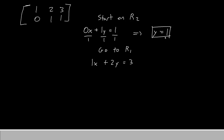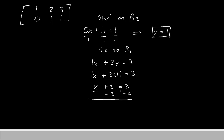But we know that y is 1. Let's plug 1 in: 1x plus 2 times 1 equals 3. If we simplify, that gives us x plus 2 equals 3. To solve for x, simply subtract 2 from both sides. The 2s cancel, and so we'll have x equals 1. So our answer for this matrix is written inside angular brackets: x comma y, which gives us 1 comma 1.